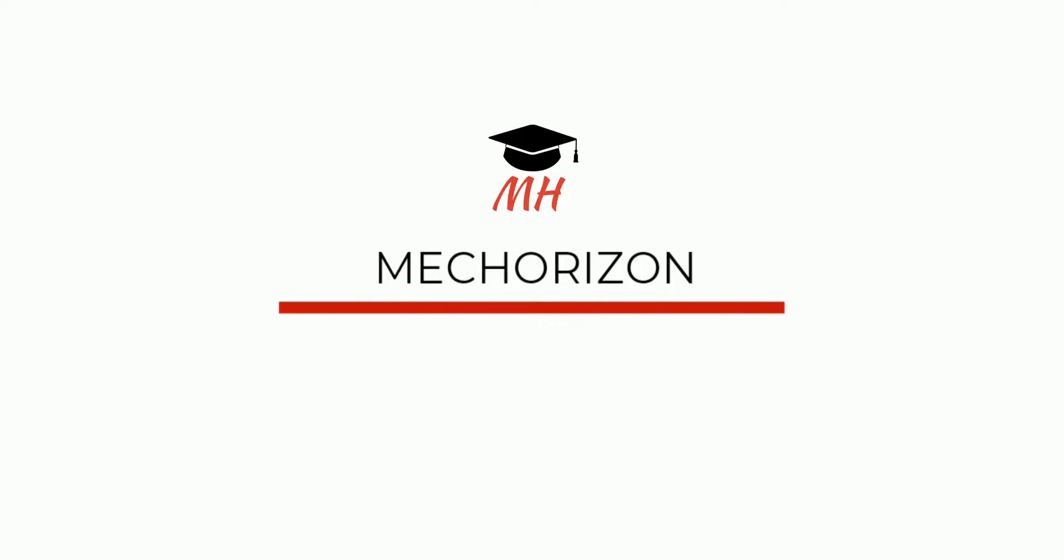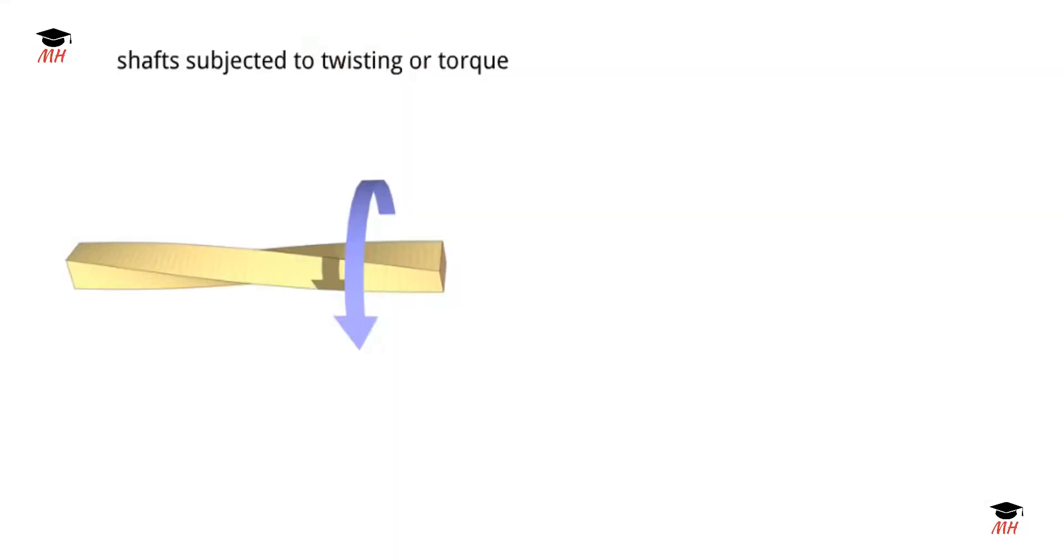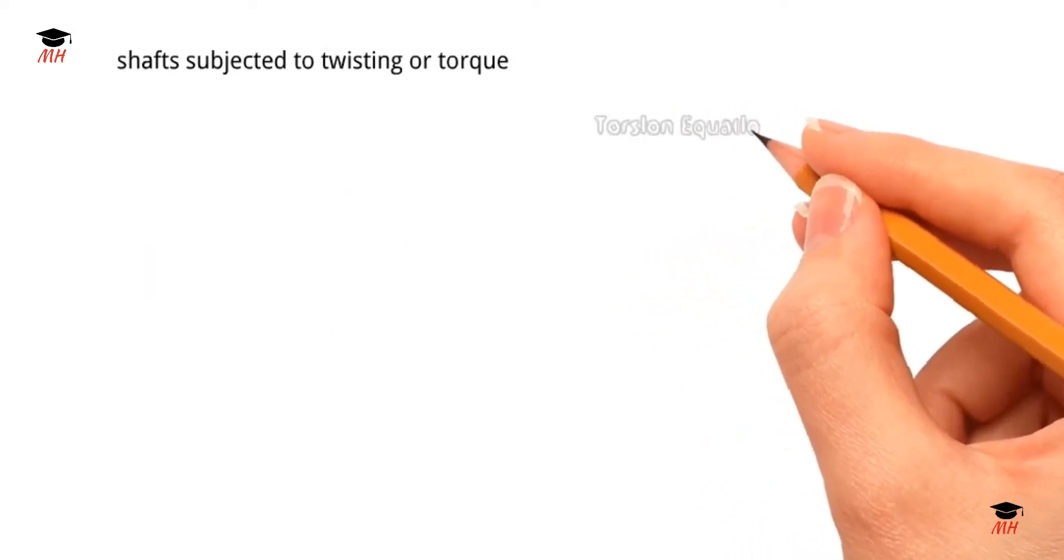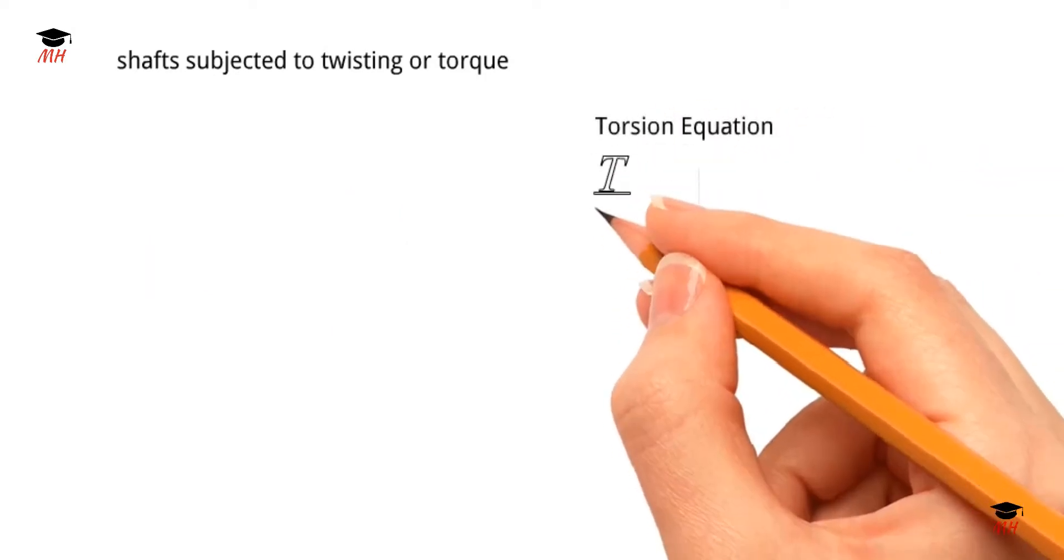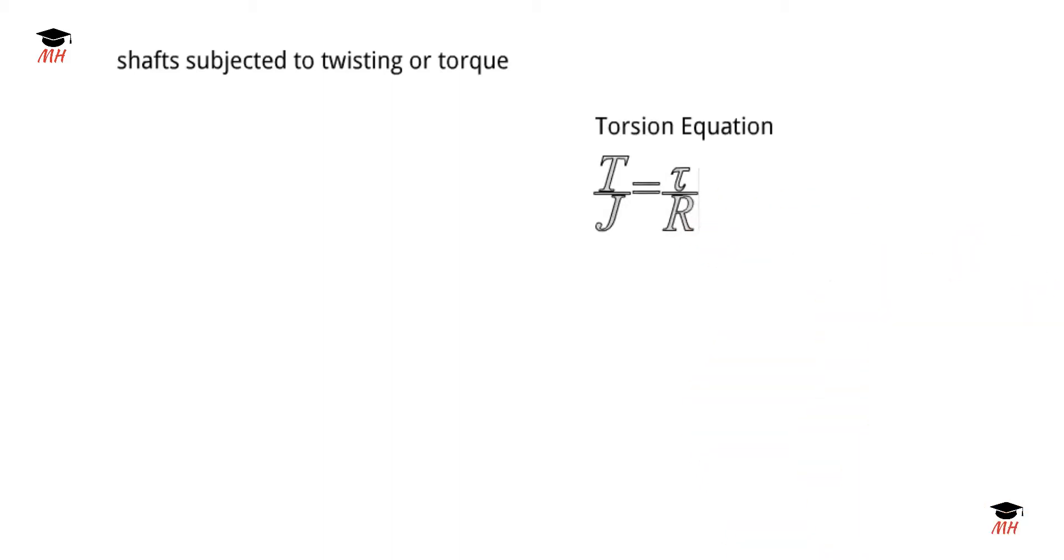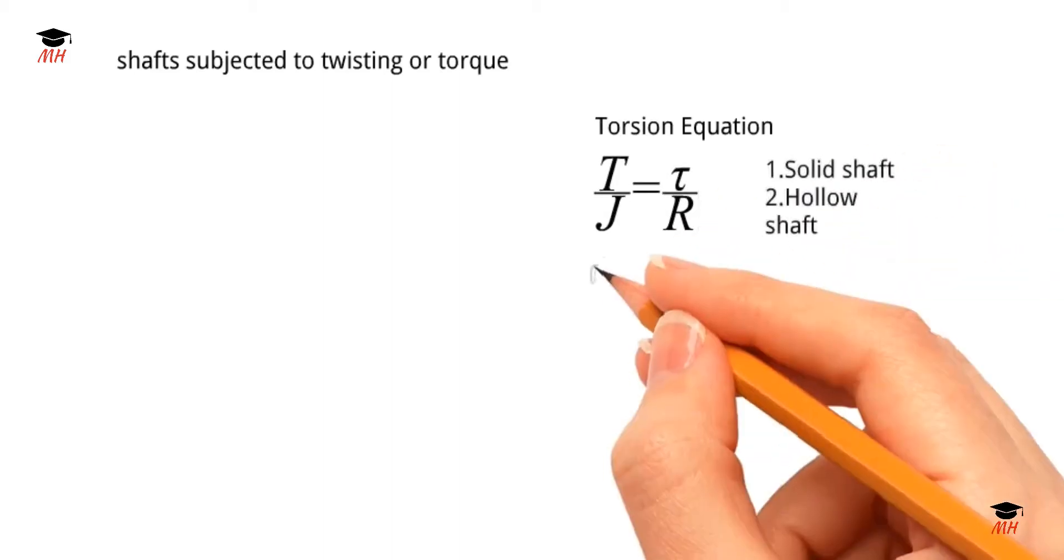Consider one shaft fixed at one end with torque applied at the other end. This torque will cause the shaft to twist and be subjected to torsion. The formula for torsion is T/J equals τ/R. Now we have two types of shafts: solid and hollow.